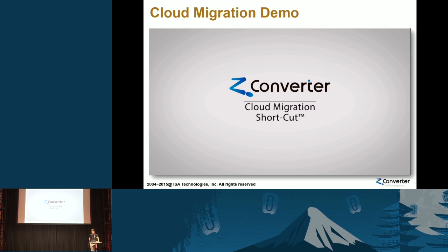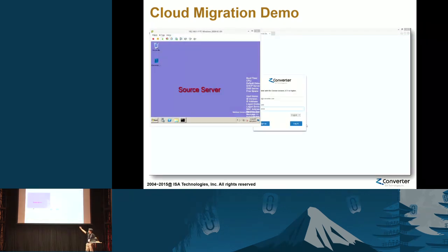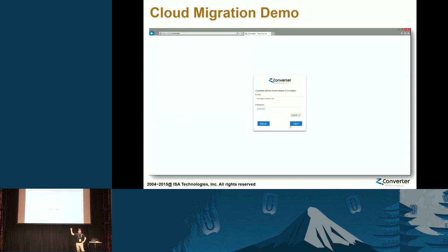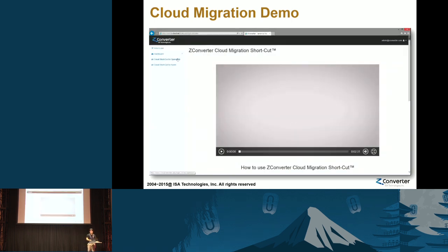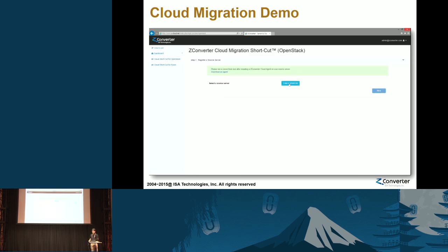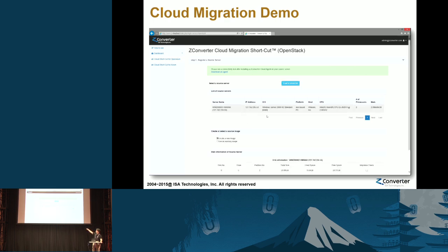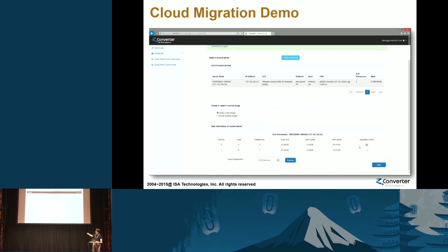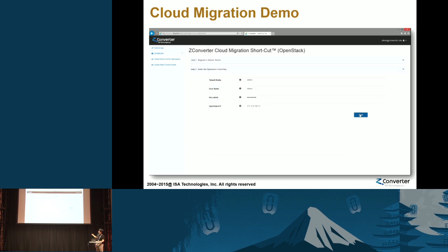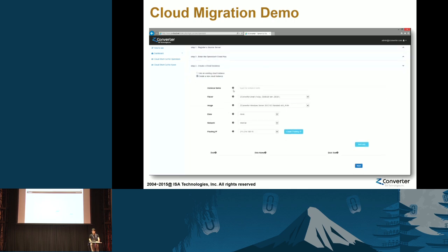This is the cloud migration demo. The left side is the source machine. We are going to move that source machine to the target OpenStack cloud. The first step is to register the source machine — download the agent. This shows the information from your source machine identified by our website. Choose the drive you want to move to the OpenStack cloud and choose the repository, then click next. This is the login process to your OpenStack cloud — after this, you can create your cloud instances from our website.